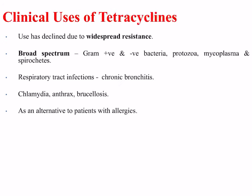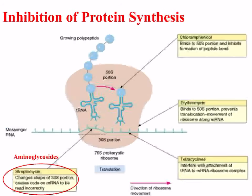Their clinical use has declined in recent years due to widespread resistance. They are broad spectrum for gram-positive and gram-negative bacteria, but also for protozoa, mycoplasma, and spirochetes. They can be used for some respiratory tract infections causing chronic bronchitis, and are also indicated for chlamydia, anthrax, and brucellosis. They can be used as an alternative for patients with allergies to other antibiotics.